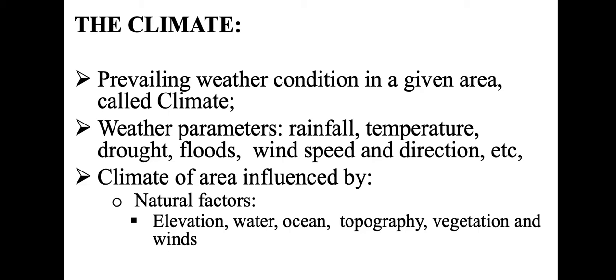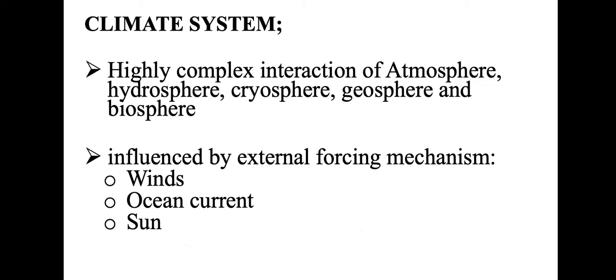Climate in a given area is influenced by certain factors. There are natural factors such as elevation, water, ocean, topography, and winds. We know that when you go to high grounds it gets cold, and when you are on the coast, the ocean moves away from or towards the coastline during the day. There are also other factors that influence climate apart from natural factors, which we'll hear about soon.